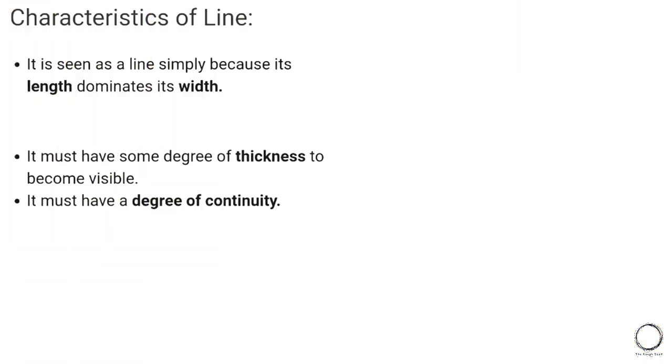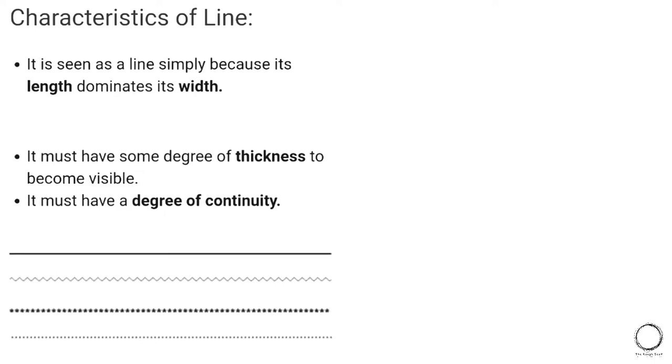A point extended becomes a line, which has only length dimension but no width or depth. A line is perceived as a line simply because its length dominates its width, and it must have a degree of continuity. Lines are observed in different ways — vertical, horizontal, diagonal, curved — and each indicates a sense of emotion.